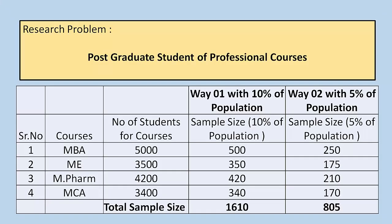Let us take one example to understand how we can use this simple thumb rule for sample size calculation. In this example, a university wants to decide whether to go online or offline for the final examination. For that purpose they want to interact with students and understand their opinion — what is the preference of the student for the final examination, whether online mode or offline mode.